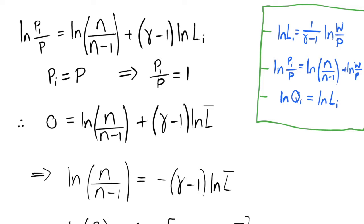We begin by substituting the optimal firm price equation into our optimal labour supply choice. We rearrange to isolate the natural logarithm of the real wage, and substitute that into the optimal labour supply equation for the same term.